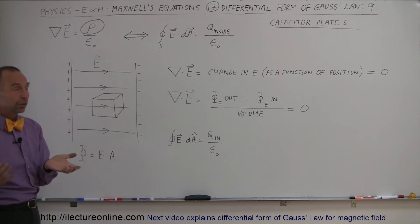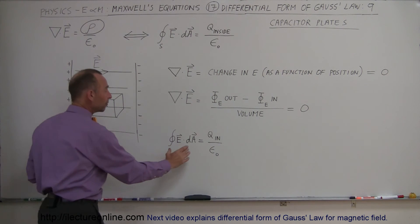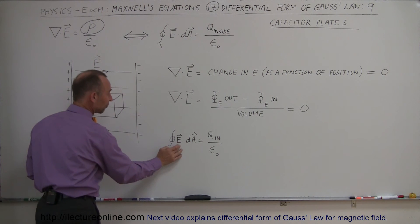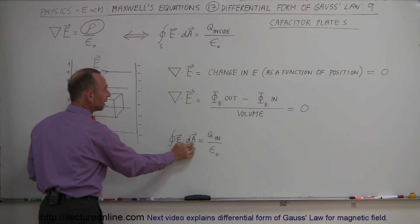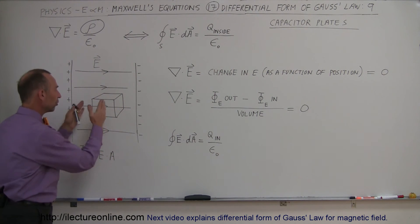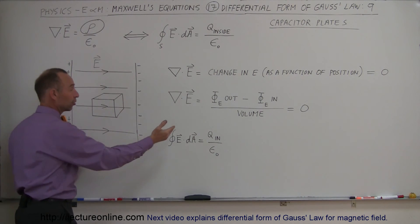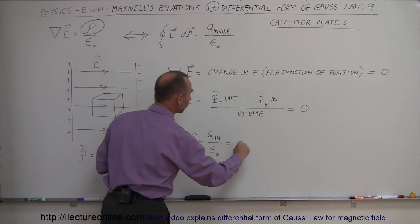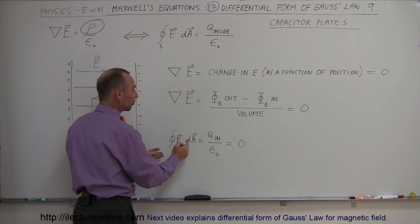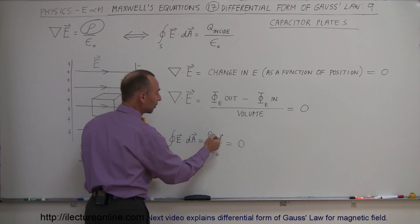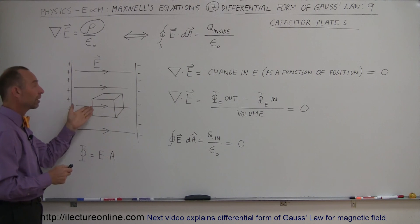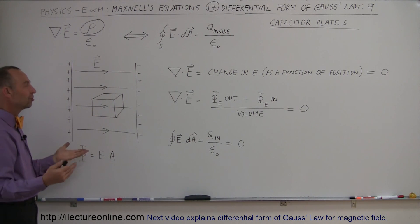We can also look at the integral form of Gauss's law, indicating that the surface integral over this cube of the strength of the electric field times the area has to equal the charge inside divided by epsilon sub nought. But in this particular case there is no charge inside this cube, so the charge inside equals zero. That means this must also equal zero, and therefore the electric field times the area of the Gaussian surface has to be zero because there's no charge inside the cube. And if there's no charge inside the cube, then the divergence of the electric field is zero because the electric field doesn't change — it is constant.